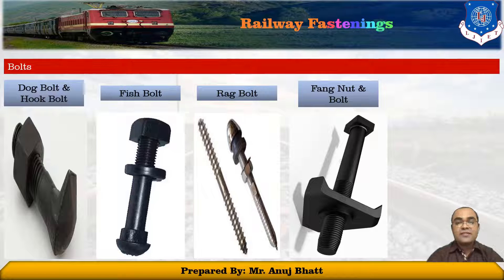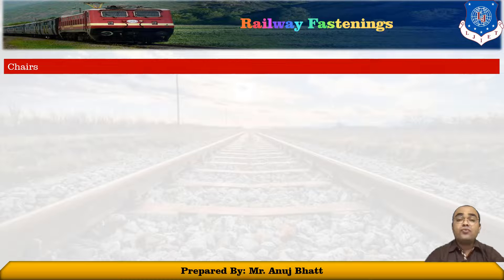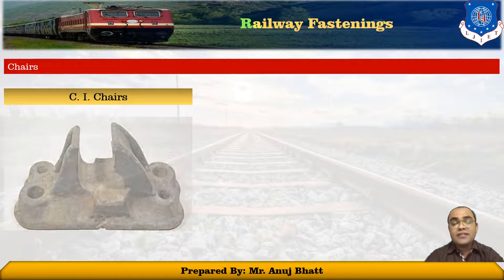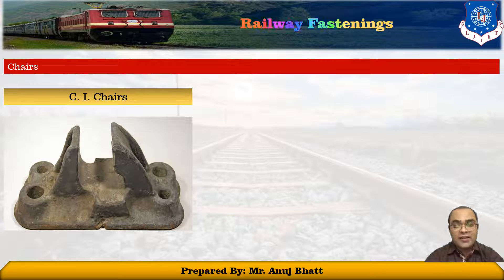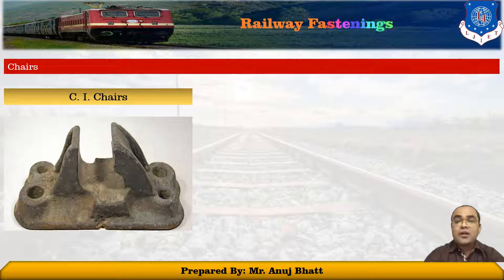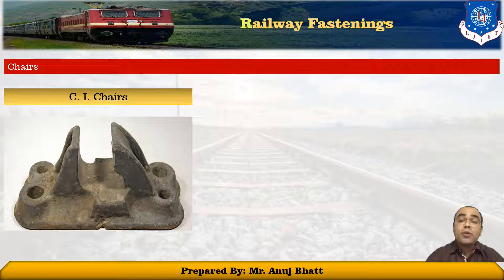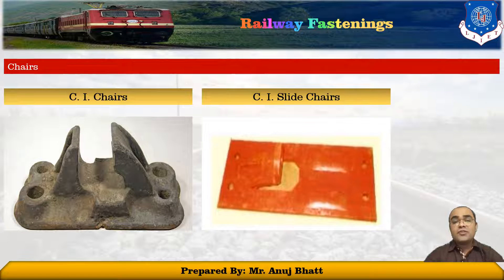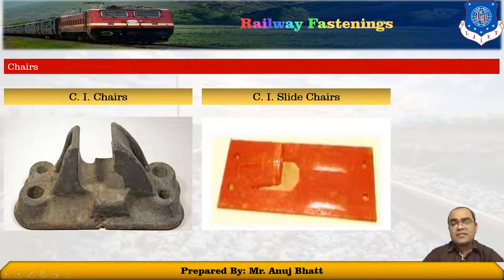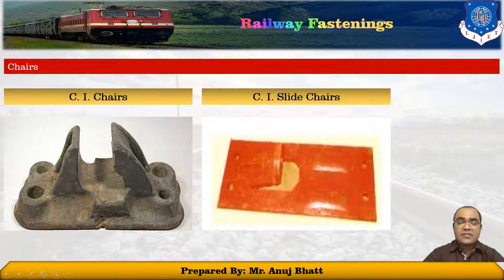The next fastening is the chair. There are two types of chairs used to hold the rails in proper position. The first is the CI chair: bull-headed rails are supported on cast iron chairs and these are fixed to the sleepers by round spikes. In cast iron sleepers, the chairs are cast with the sleepers; in steel sleepers, the chairs are welded to the sleeper for proper strength and binding. The second type is the slide chair: these are plates of special shape on which the stock and tongue rails are rested. The gap allows the rails to be fixed into it with proper binding.